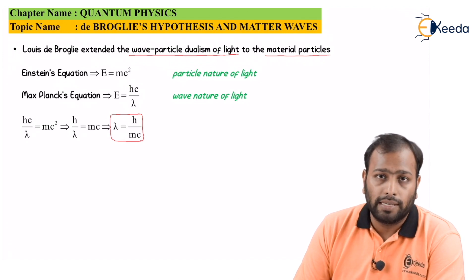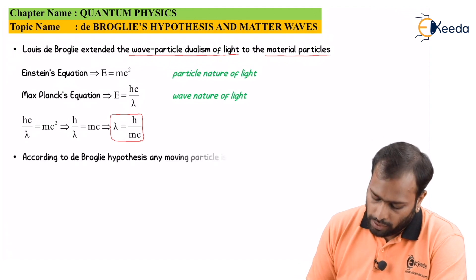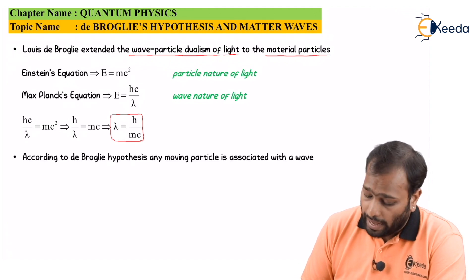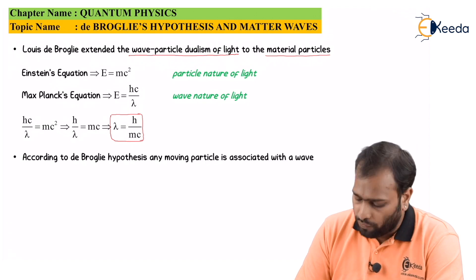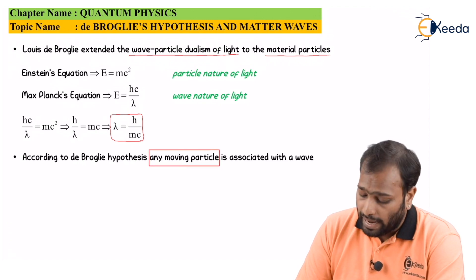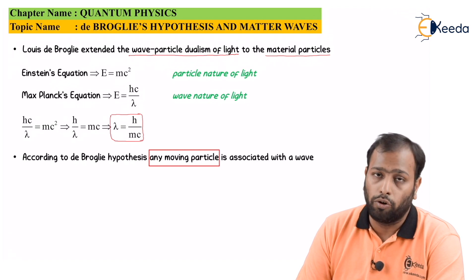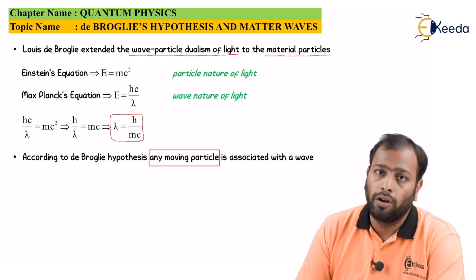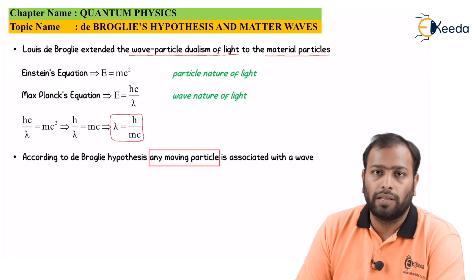De Broglie then converted the same equation to real world objects. According to his hypothesis, any moving particle is associated with a wave. It could be right from the minutest particle, which is an electron, to you and me — any moving particle is associated with a wave.